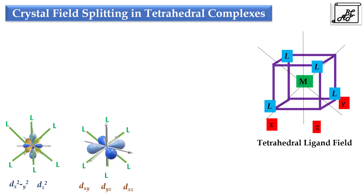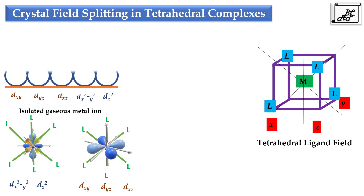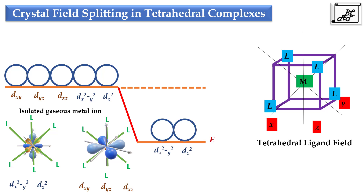From this, we can understand that in case of tetrahedral ligand field, where the ligands are between the axis, they will definitely exert more effect on the t2 set of orbitals, as the ligands are directly in front of the lobes of the t2 set of orbitals. In case of isolated gaseous metal ion, all 5 d orbitals have the same energy. But when the ligands are arranged in the tetrahedral ligand field, the e set of orbitals, which are not directly facing the ligands, will face less repulsion and their energy will decrease by -6dq.